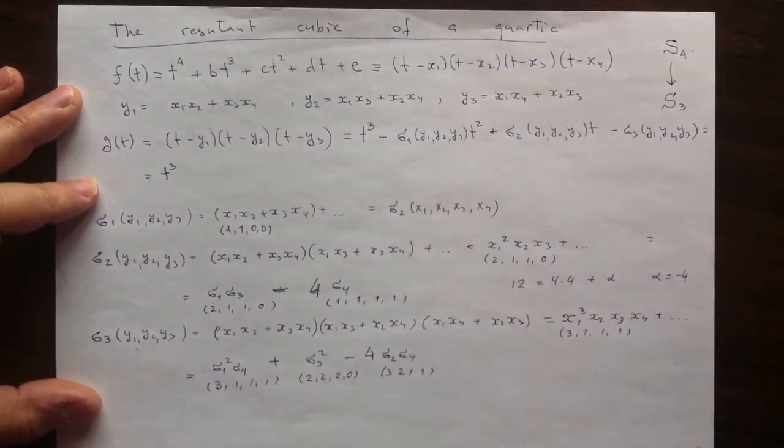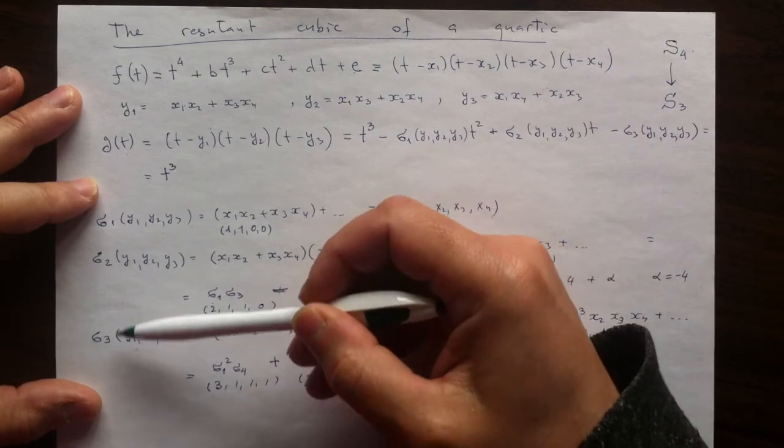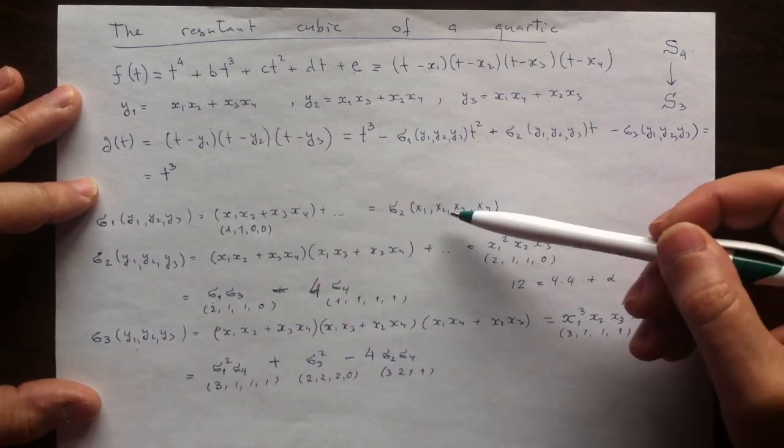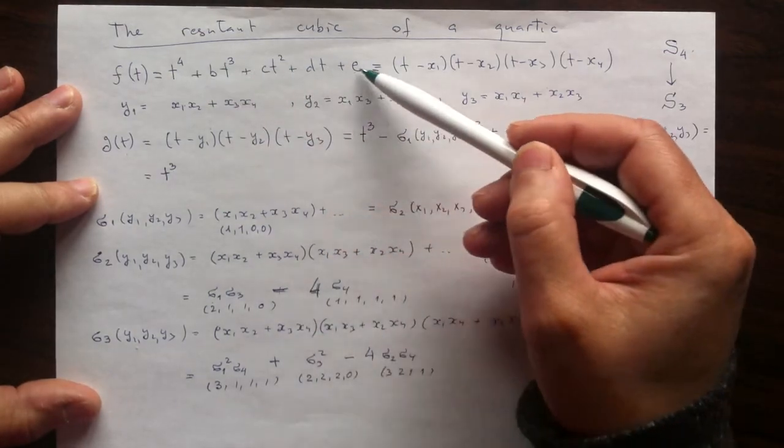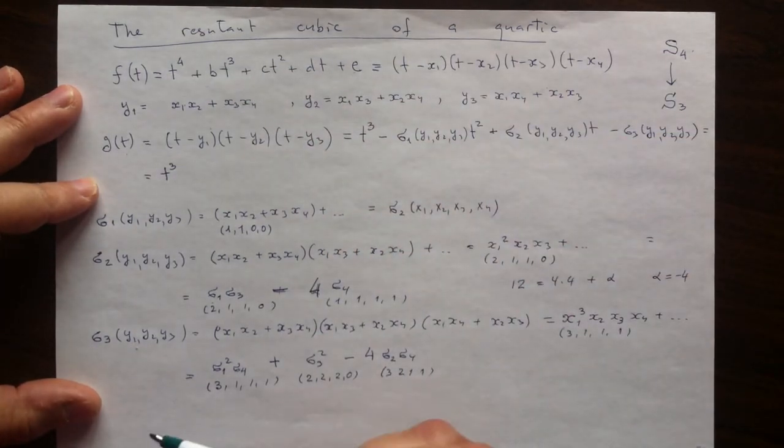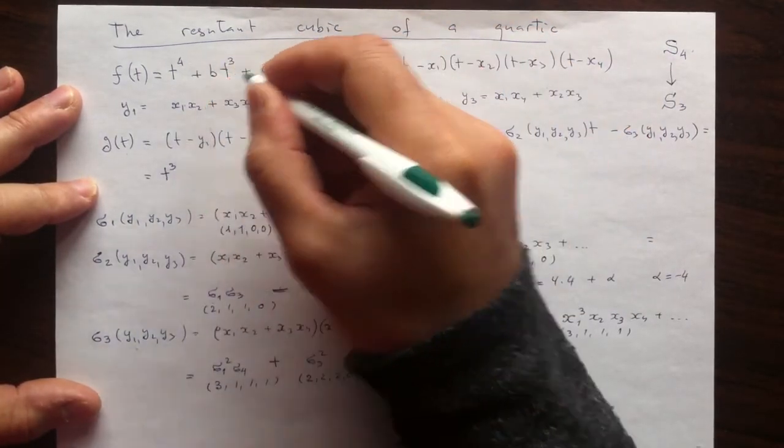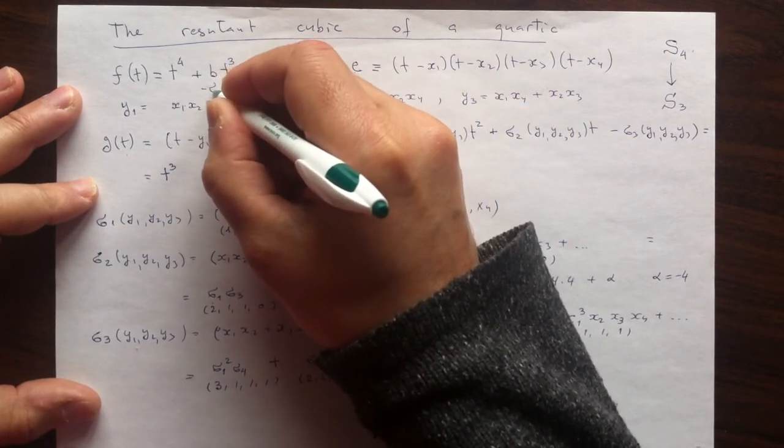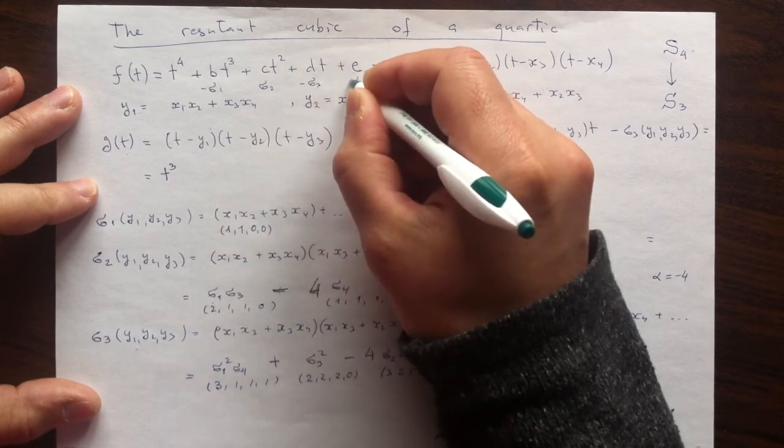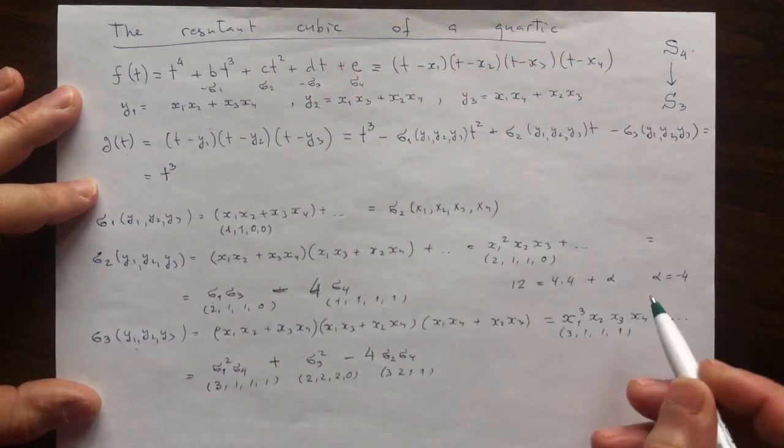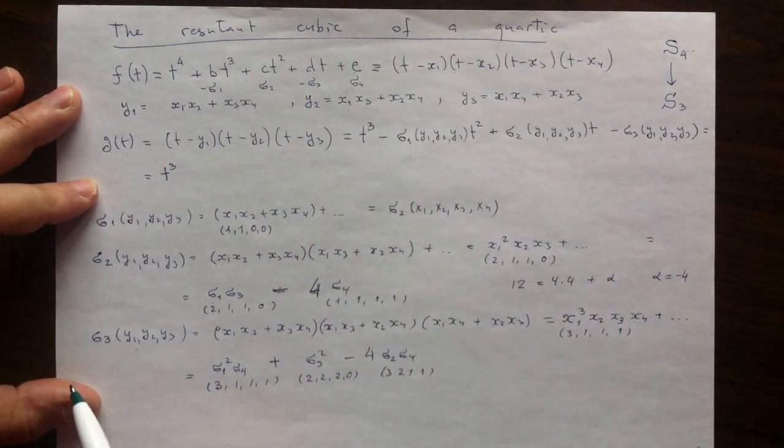They are here. They are these quantities, but now I have to turn them into the original given coefficients for f. Here I have negative σ1, positive σ2, negative σ3, positive σ4 of x's.